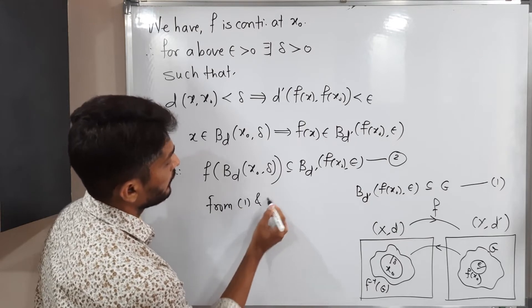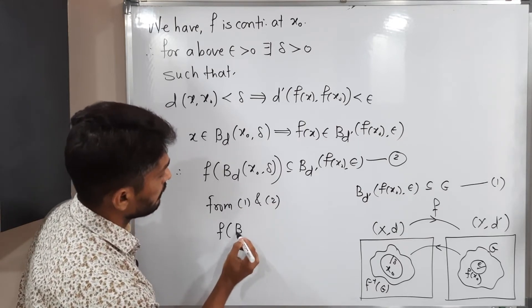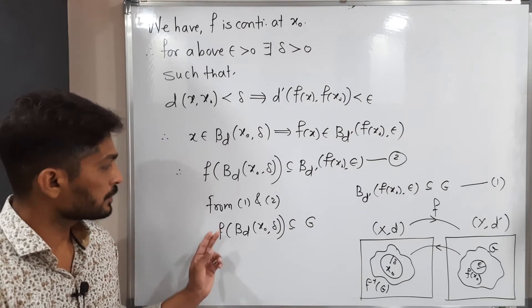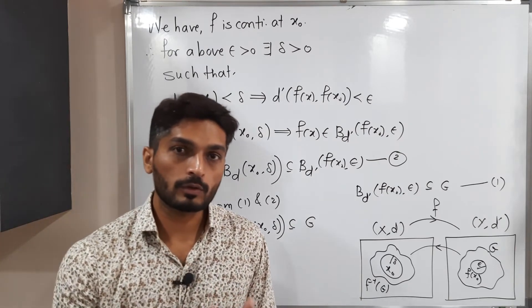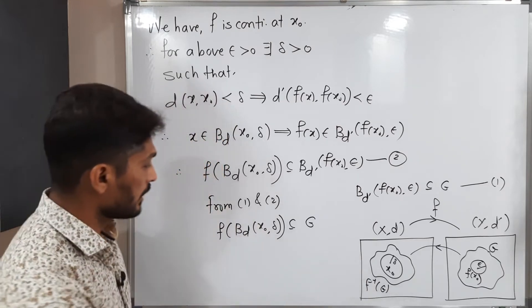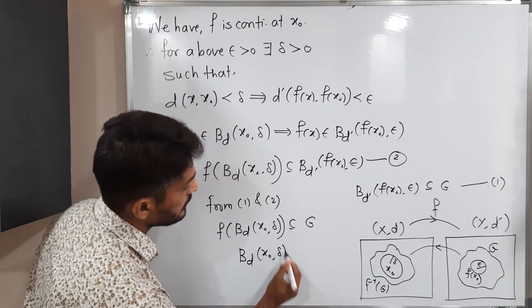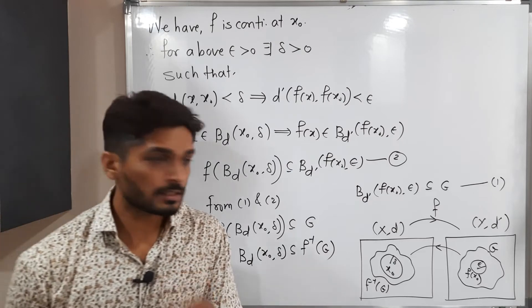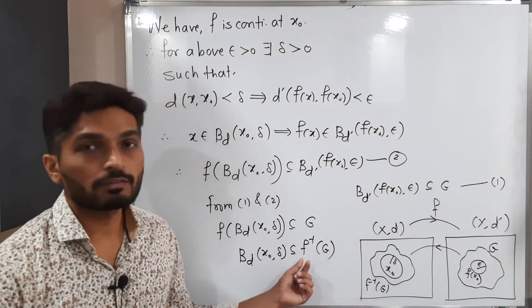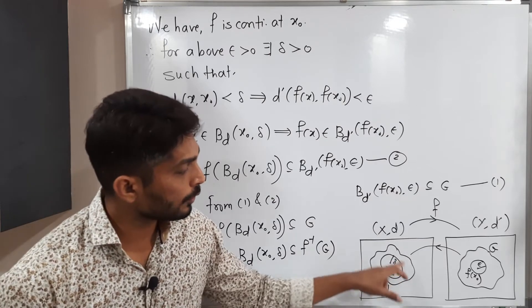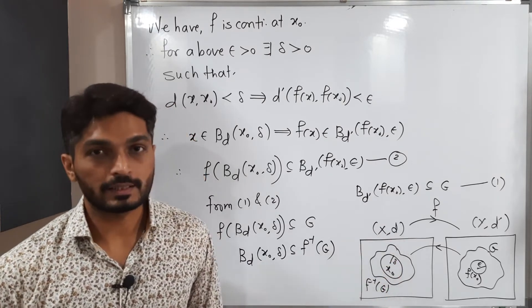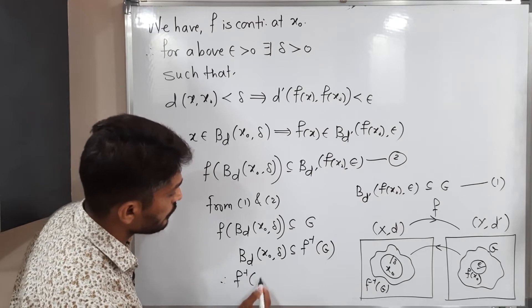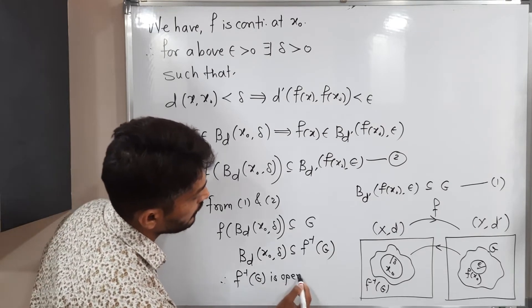Can we combine equations (1) and (2)? We are getting A ⊆ B and B ⊆ C, so we can write A ⊆ C. From (1) and (2), f of B(d; x₀, δ) is a subset of G. Shifting f to the other side gives f inverse, so B(d; x₀, δ) is a subset of f inverse of G. Therefore, f inverse of G is open in X.